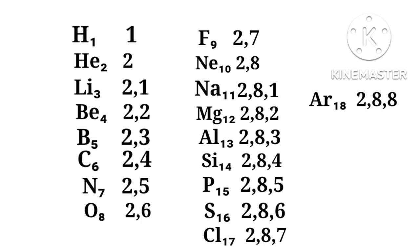If previous orbits are full, hence the next orbit will be opened up. Therefore, potassium has 2,8,8,1. And last one is calcium, 2,8,8,2.